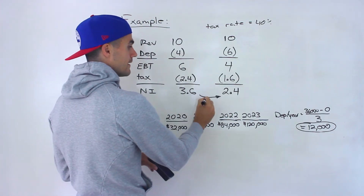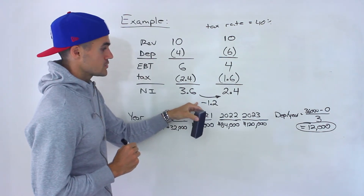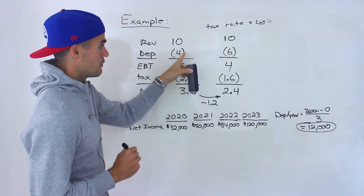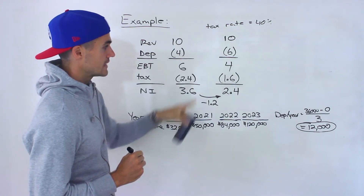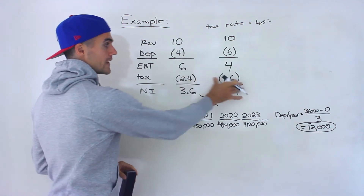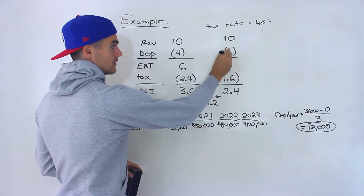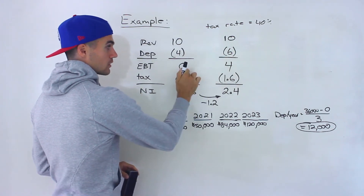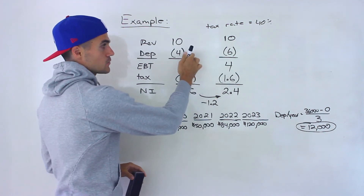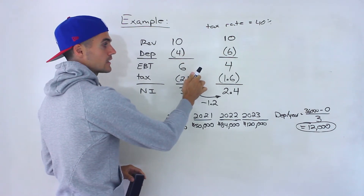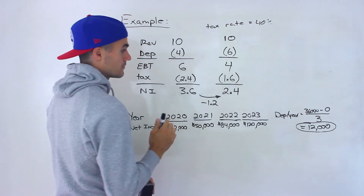Looking at how the net income was affected, it went down by 1.2. Notice that this 1.2 is different from the $2 increase in depreciation. The difference comes from tax savings — because the depreciation expense was higher, earnings before taxes was lower, so taxes were lower. Yes, we had an increase in expenses, but we also had tax savings, and netting those two out gives us the change in net income.